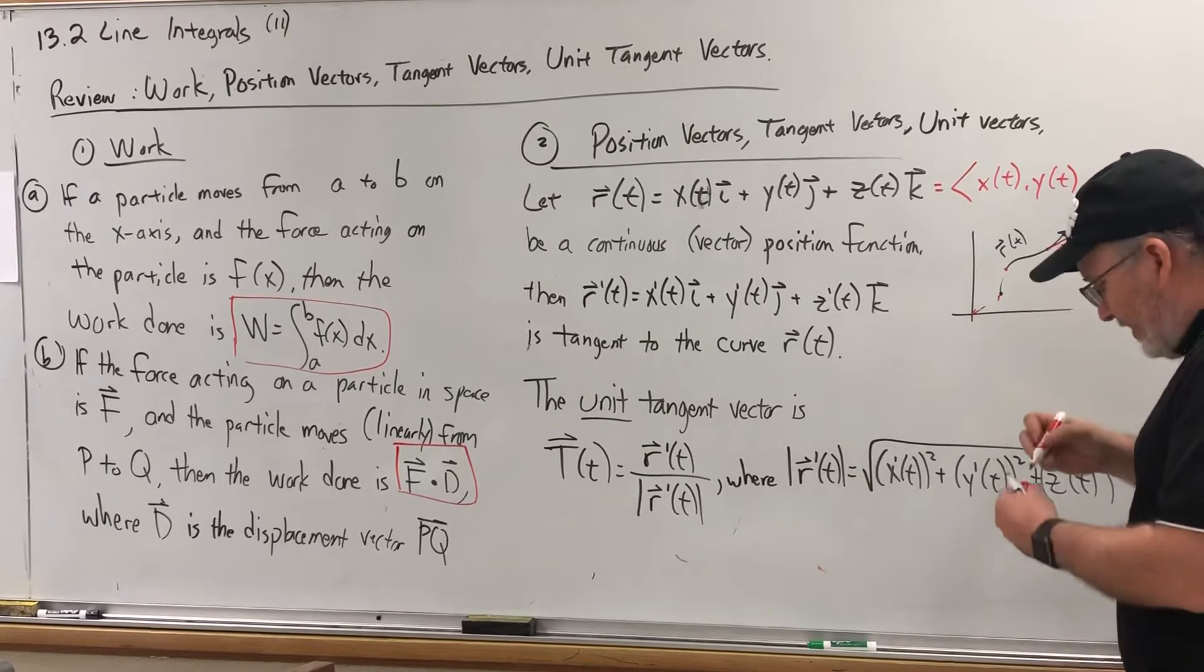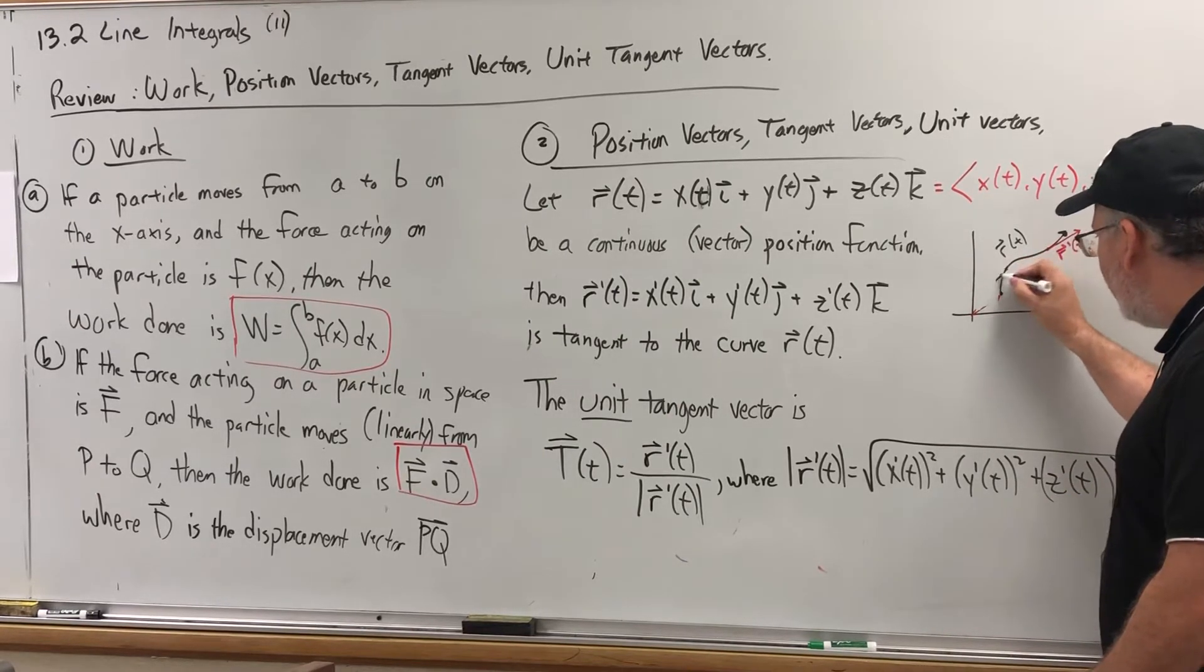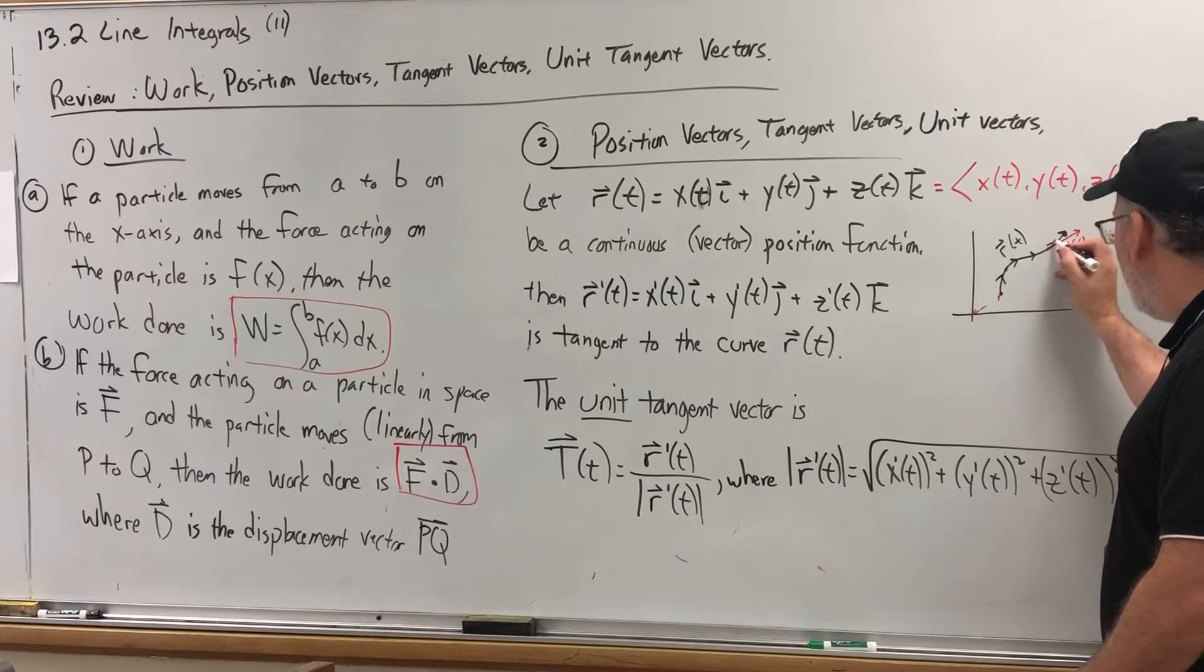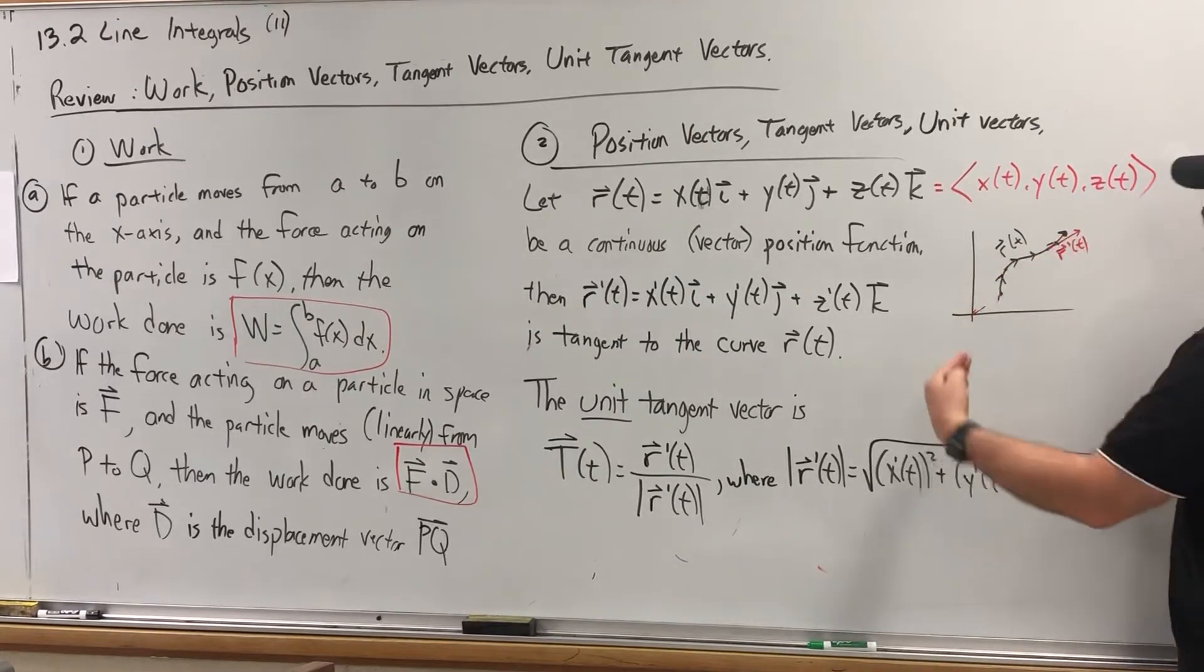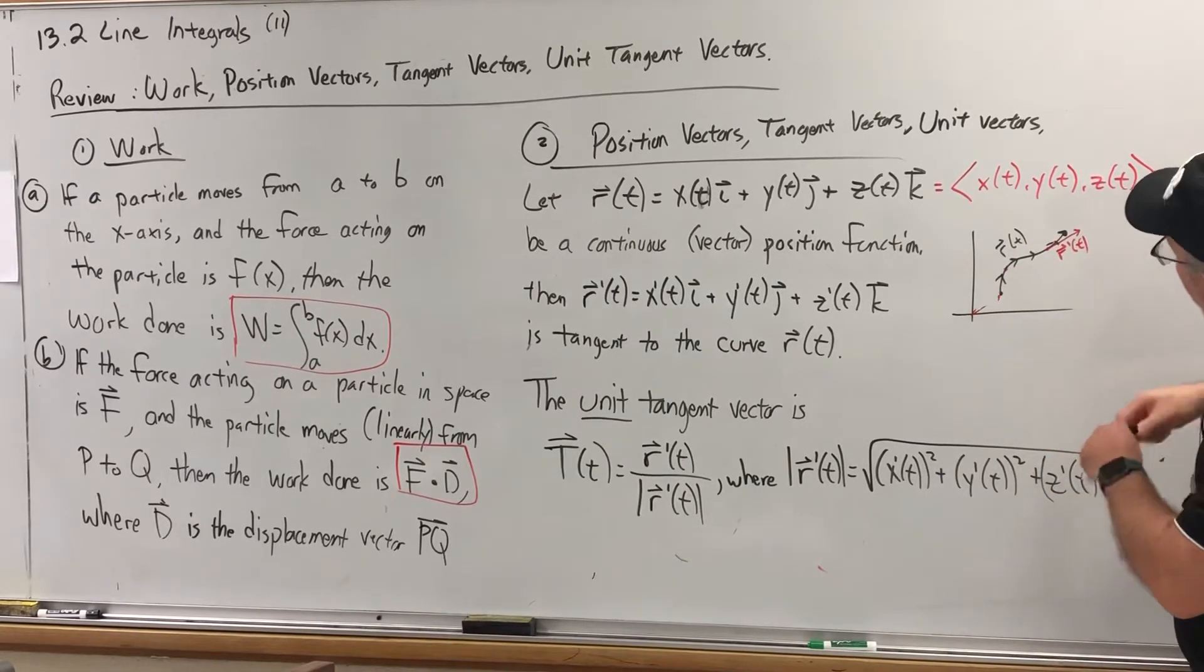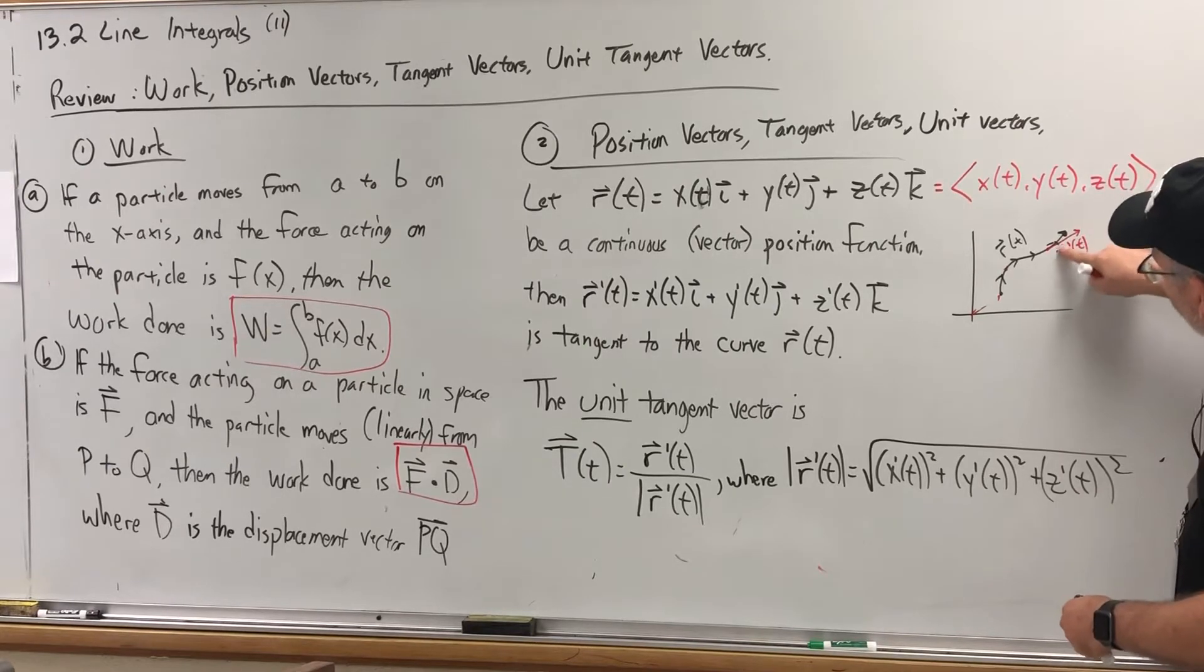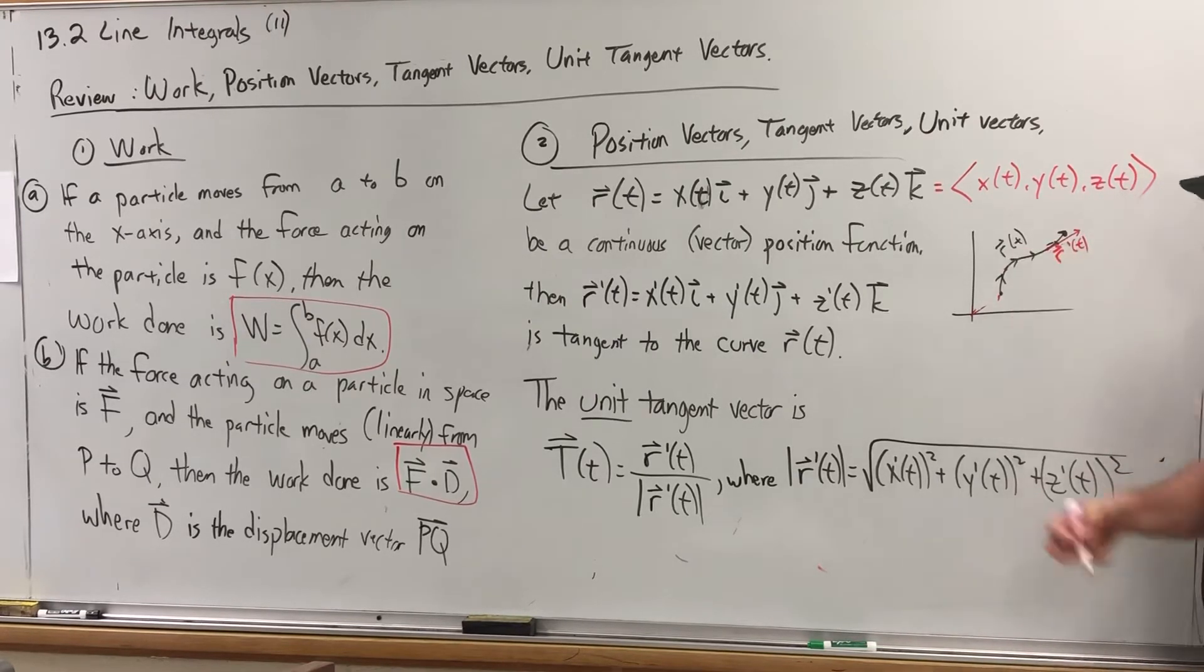And if I recall correctly, the direction of the tangent vector is in the same direction as the orientation of the curve. Actually, that makes perfect sense, because this would be the force, this would be the direction that the particle is going. So of course, if the orientation were reversed, then the tangent vector would point the opposite direction. By the way, this looks like an F. If it's not, it's an R with an arrow over it. So the derivative of the R function.